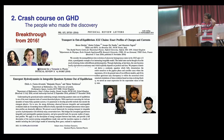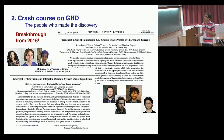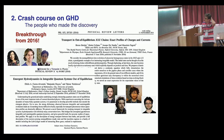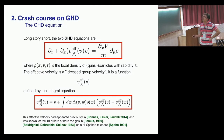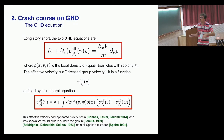Now about GHD: two papers came out in spring 2016 within a week on the arXiv, and they really started the field — many people were inspired and many important developments followed. Long story short, GHD is a set of two equations. The first is a Liouville-like equation for the phase-space density of particles, with position x and velocity v — at least that's true for the hard-rod gas; for other models this object is slightly more complicated.